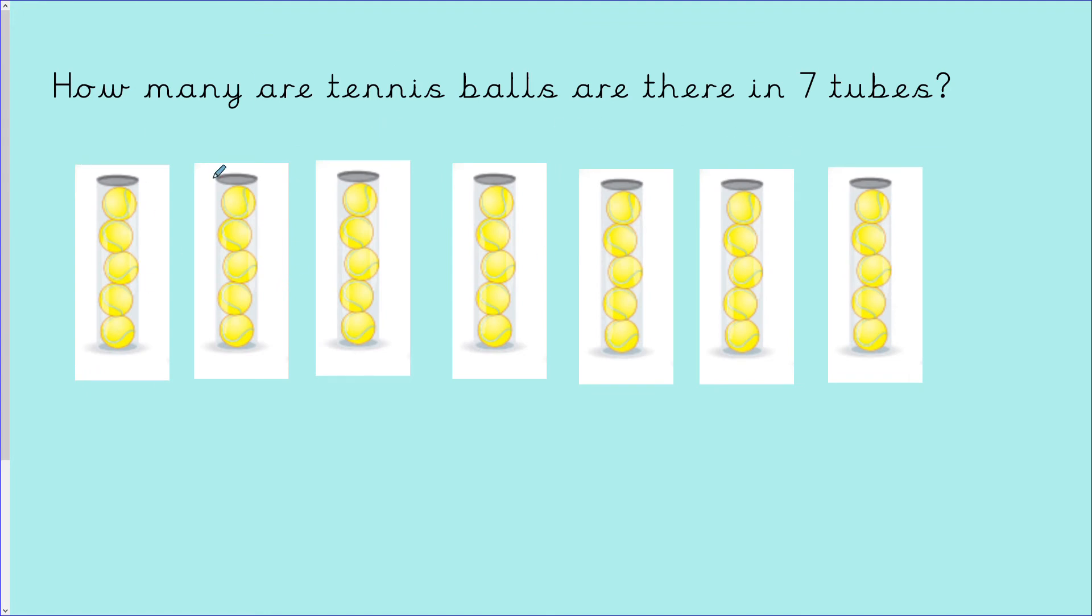So we have seven tubes of tennis balls and we know each tube has five tennis balls in. So I'm going to use my fives to count all tennis balls. How about you pause the video here and have a go first. Excellent, I hope you've all had a go. Let's do it together. 5, 10, 15, 20, 25, 30, 35. We've got 35 tennis balls all together. If I was going to count them one by one, I'll be here a very, very long time. So counting in fives makes it easier and quicker.